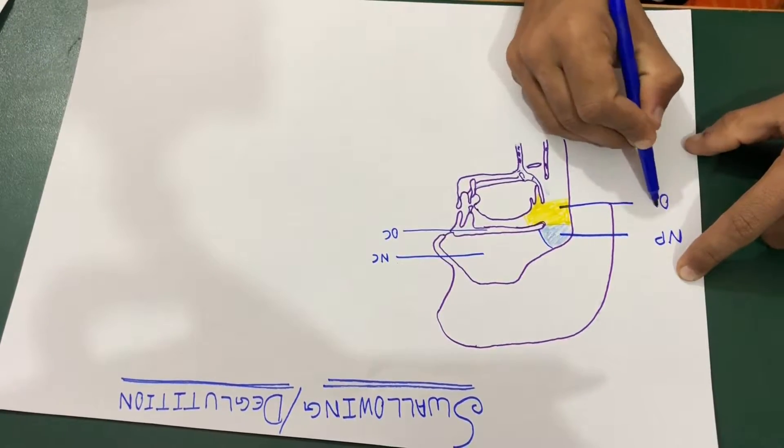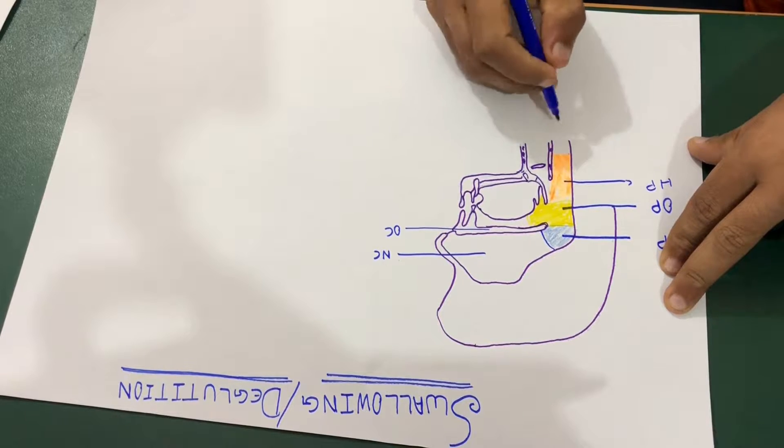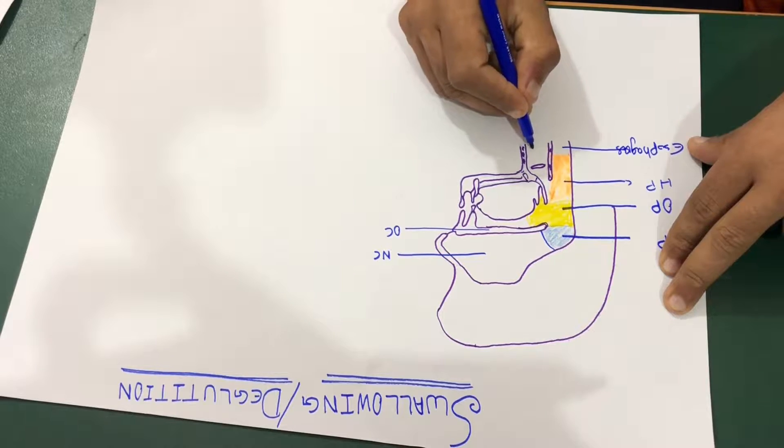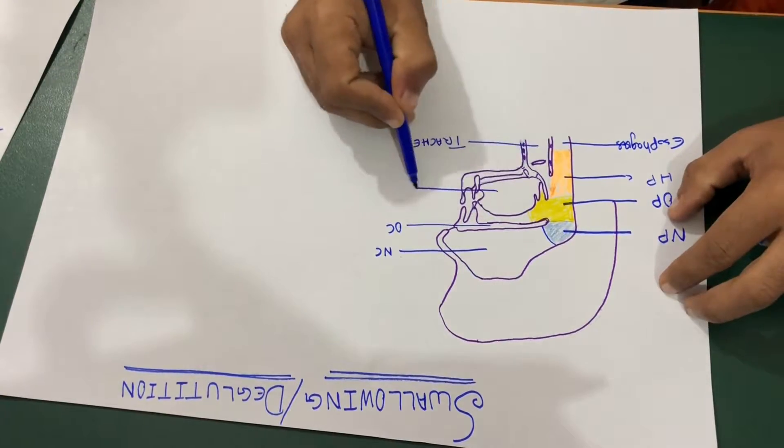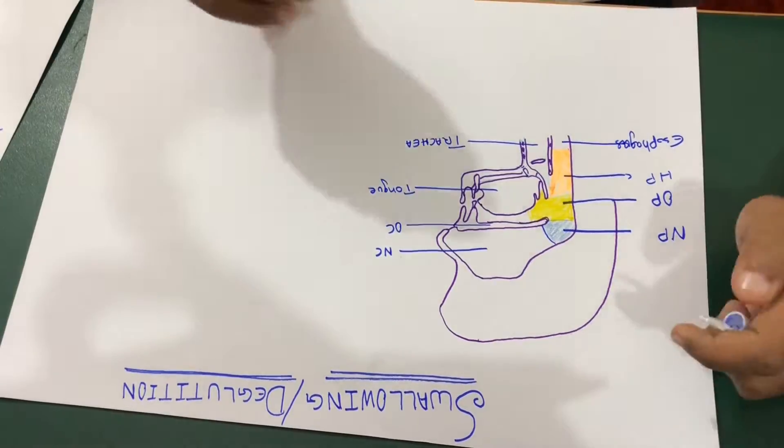The fifth one is your hypopharynx. Down to the hypopharynx, you have the esophagus. On the other side of esophagus, you have your trachea and above there, you have your tongue and finally, the last structure which I'm going to draw is your epiglottis.